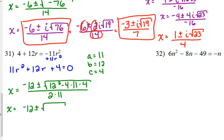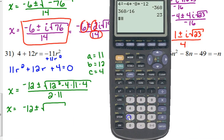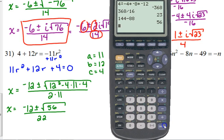So what's under the square root? 12 squared is 144 minus 4 times 11 times 4 is 88. So we've got 56 under the square root over 22.